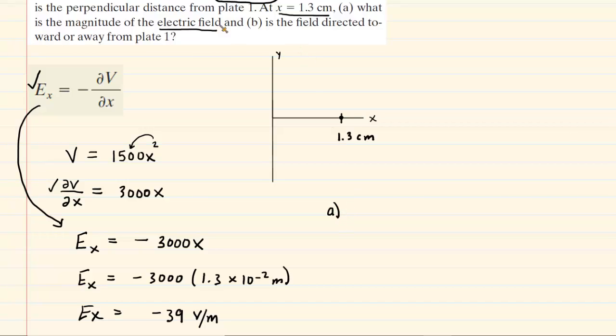Part A only wanted the magnitude of the electric field. Recall that the magnitude of the electric field would be the absolute value of the electric field that we calculated. So the absolute value would just be positive 39 volts per meter. And then in Part B we need the direction.